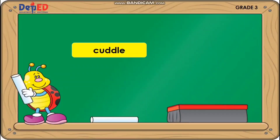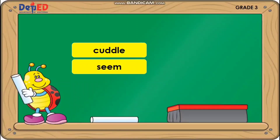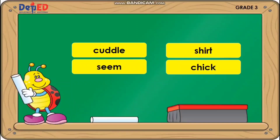Cuddle. Seem. Shirt. Chick. Which words have consonant digraphs? Brilliant — Shirt and Chick.